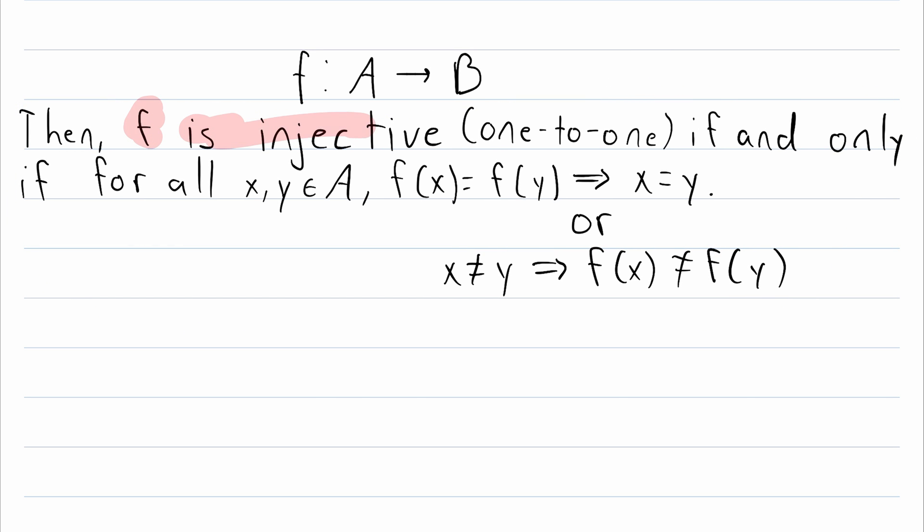f is injective, also sometimes just called one-to-one, if and only if for all elements of the domain, f of x being equal to f of y implies that x equals y, or equivalently we could use the contrapositive: for any two distinct elements of the domain, their images must also be distinct. f of x must not equal f of y.